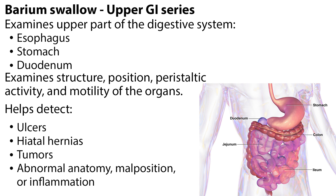The upper GI series helps to detect ulcers, hiatal hernias, tumors, abnormal anatomy, malposition, or inflammation. It involves swallowing barium in a milkshake form; however, it tastes unpleasant and may cause vomiting. The test takes about 45 minutes, during which x-rays are taken at various intervals.